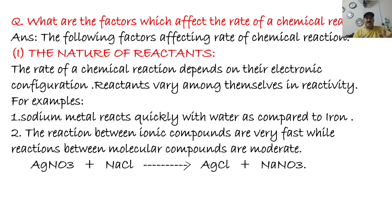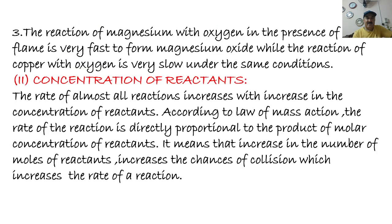The nature of reactants means which group the reactant substances belong to. Substances belonging to group one show faster reactions than those in group two, and substances in group two show faster reactions than those in group three, and so on. For example, the reaction of magnesium with oxygen in the presence of a flame is very fast to form magnesium oxide, while the reaction of copper with oxygen is very slow under the same conditions.